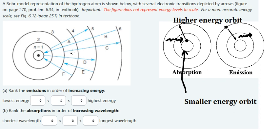Based on the question, we can see that transitions A, C, and D go from lower to higher — that is absorption. Transitions B, E, and F go from higher to lower energy, so they don't need to gain energy — that is emission.